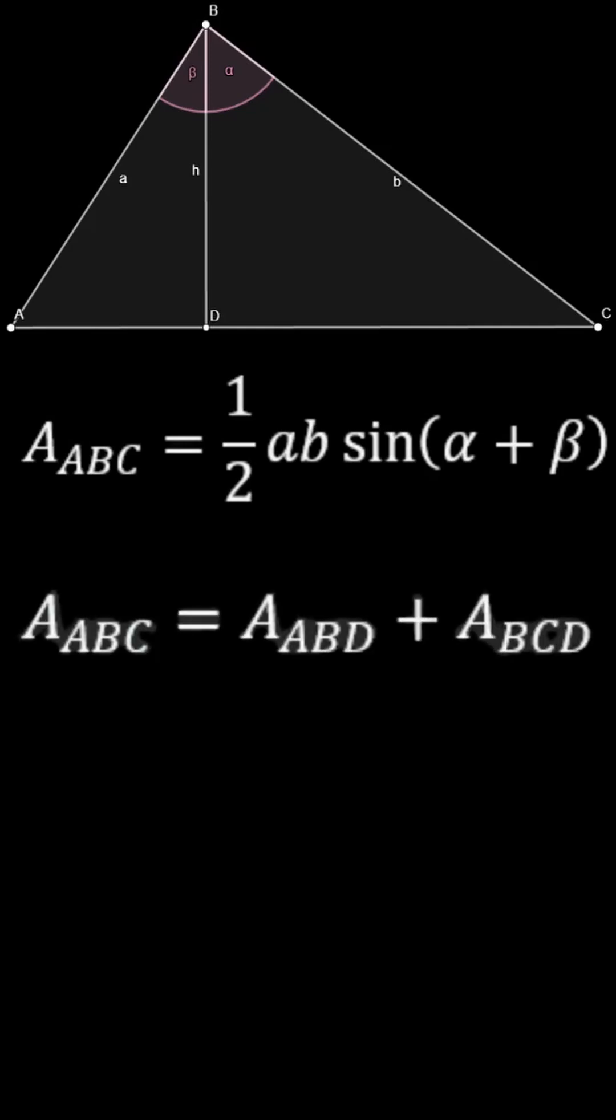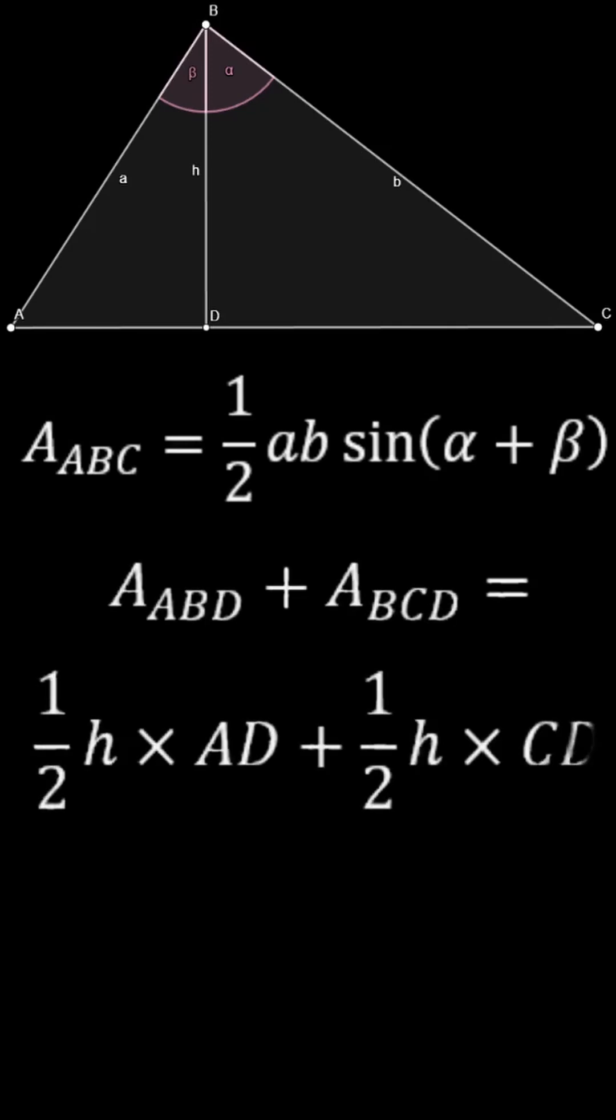Notice how its area is also the sum of two right triangle areas, of triangles ABD and CBD. The areas of right triangles can be expressed without a sine, as simply half their base times height.